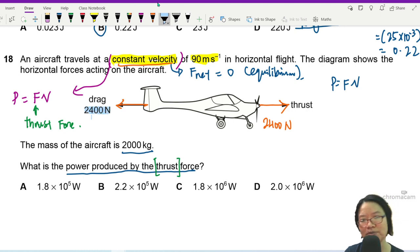2400 here. 2400 here. That's why the net force is zero. That's why it can maintain the same speed. So I can now substitute my equation.